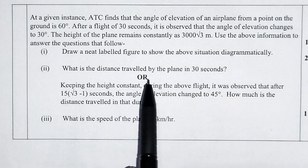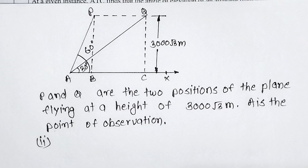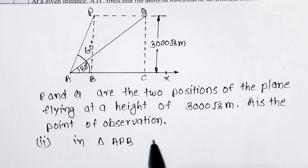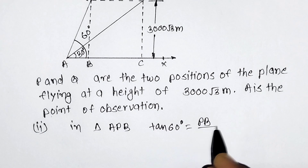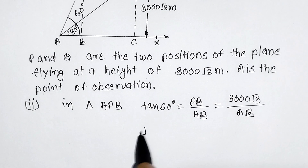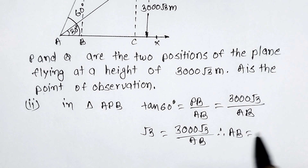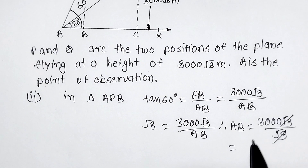Question 2: What is the distance traveled by the plane in 30 seconds? First, in triangle APB: tan 60° = perpendicular/base = PB/AB. Here PB (the height) is 3000√3, and we need to find AB. tan 60° = √3, so √3 = 3000√3 / AB. Therefore AB = 3000√3 / √3, and √3 cancels out giving AB = 3000 meters.